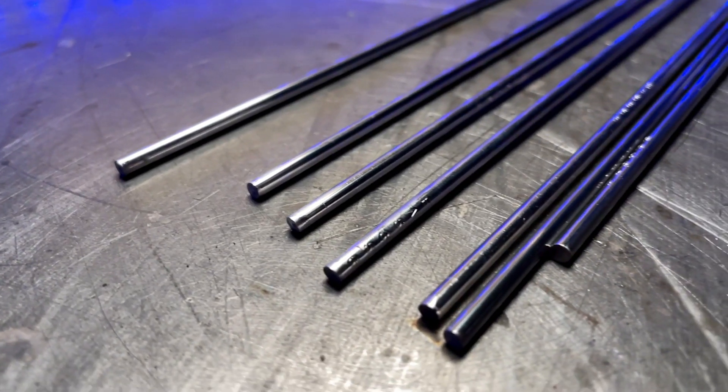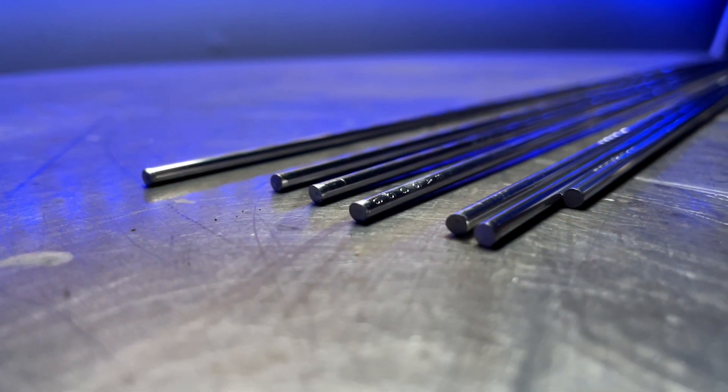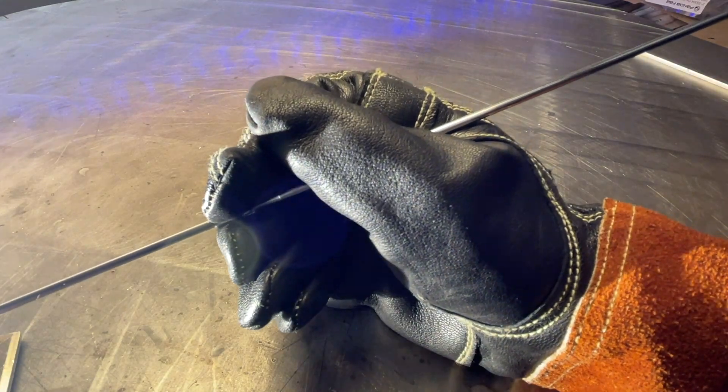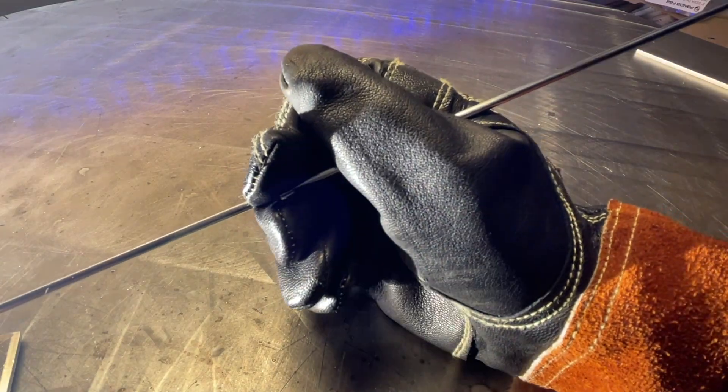Worrying about burning through at the start of a pass is definitely a valid concern. I always prefer to use 1/8 inch or 3.2 millimeter filler material. I like that this gives me a little bit of extra filler material with each dab. Even if I'm moving along doing little tiny taps, having a bit more filler material with this diameter allows me to keep my overall heat input in check.